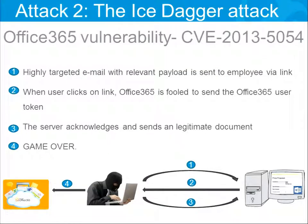That's the first example. The second attack is much more sophisticated. I wanted to show you that it doesn't stop at simple attacks — they get much more sophisticated. We call it the ice dagger attack because it's really, I would say, an elegant attack. It's like the ice dagger, which is the perfect crime: you commit the crime and the weapon will never be found because it just melts away.